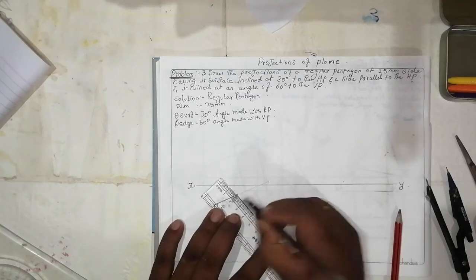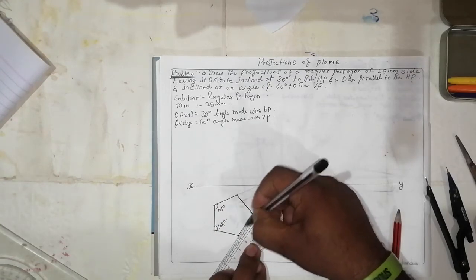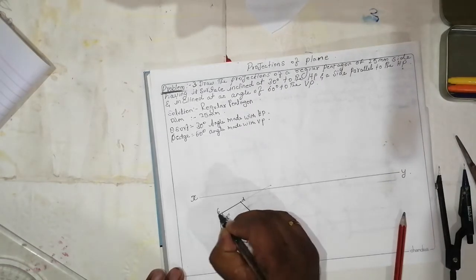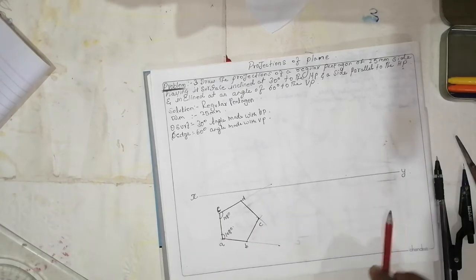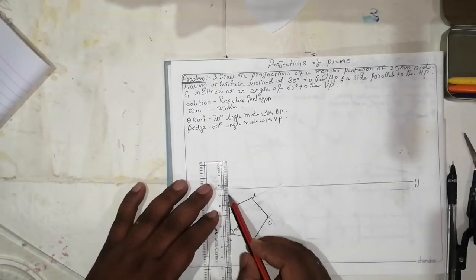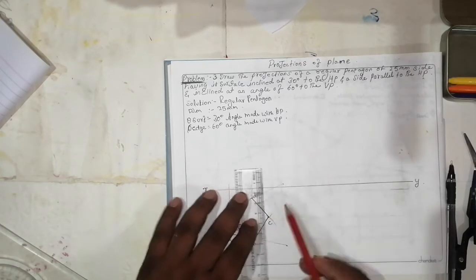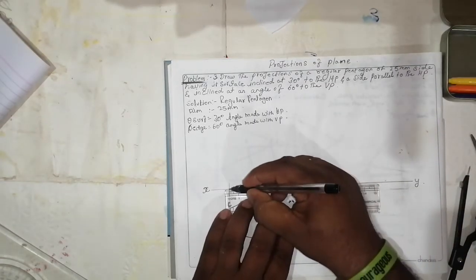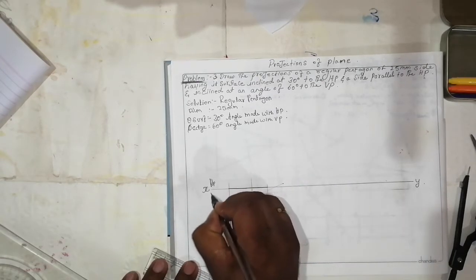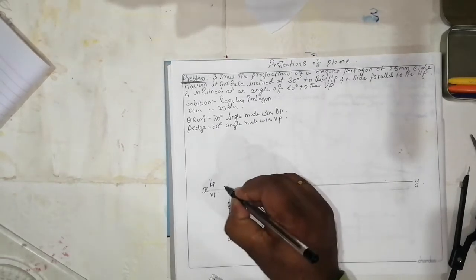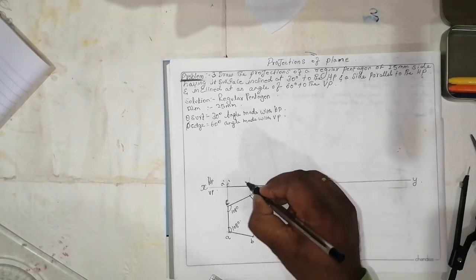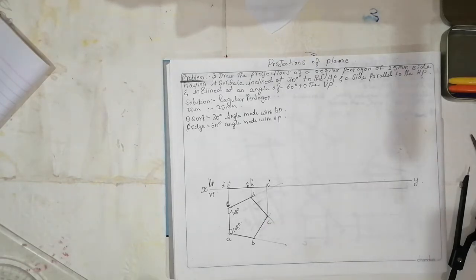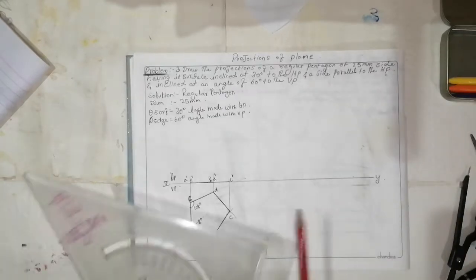All sides are 25mm so the pentagon will be like this. This is the front view — A, B, C, D, and E. Keep a horizontal line linked to this — this is the top view which is on the X-axis. This is the VP, so you will get A-dash, E-dash, B-dash, and the remaining points.